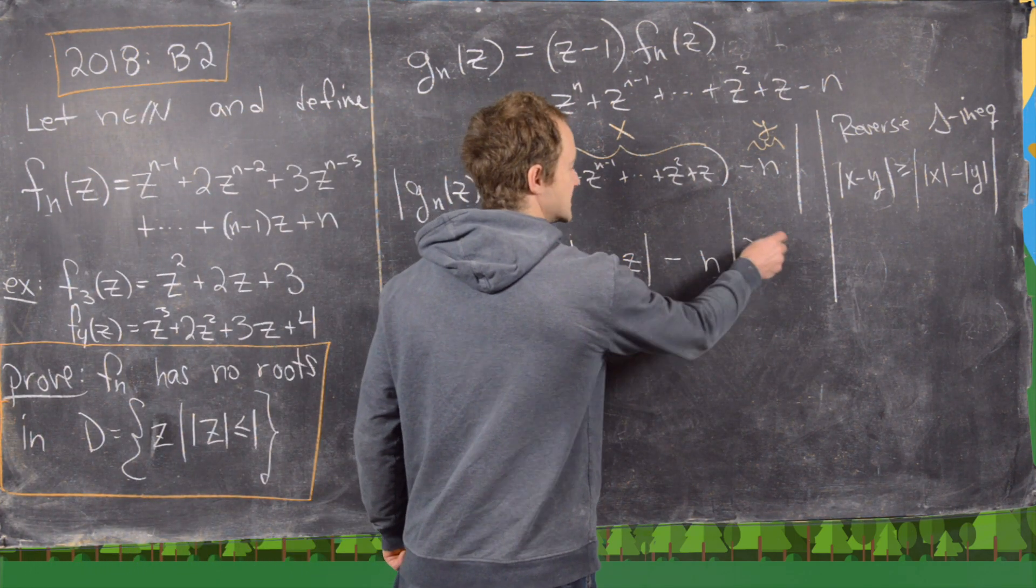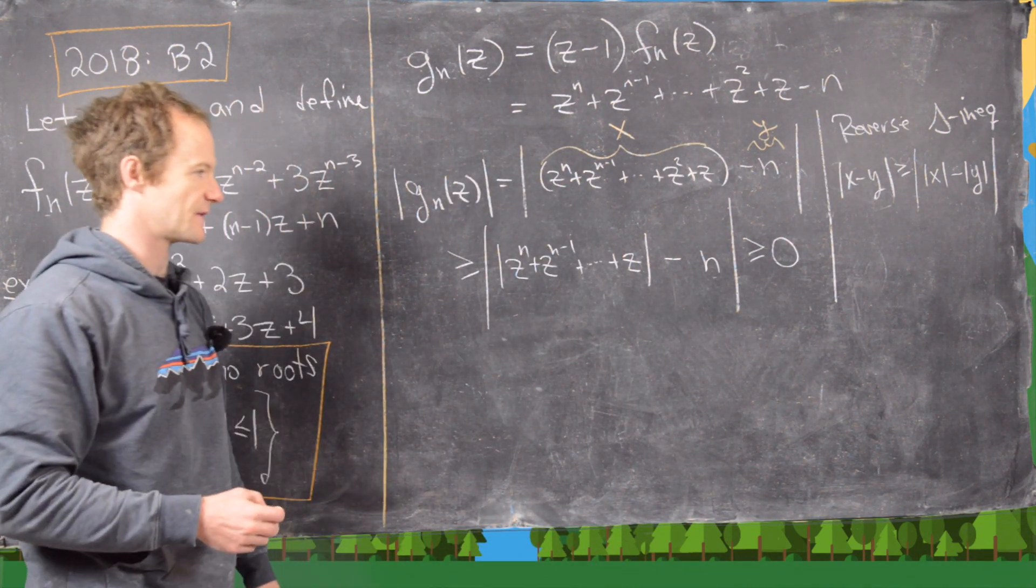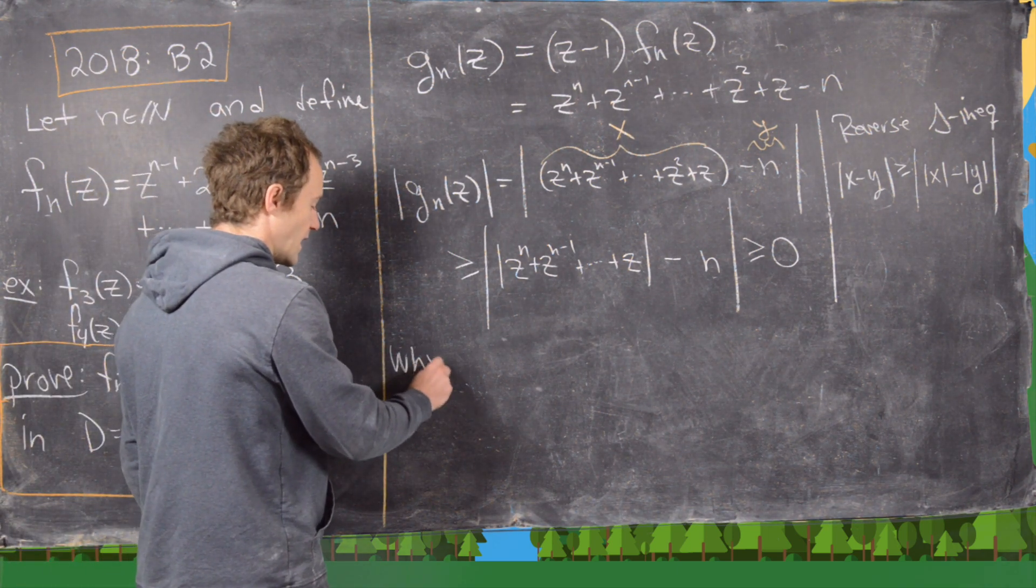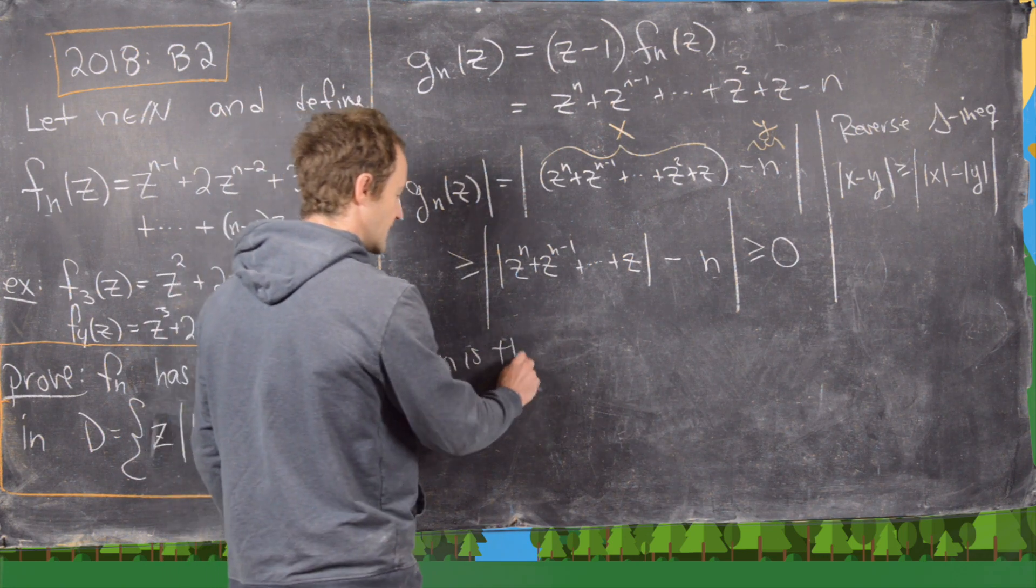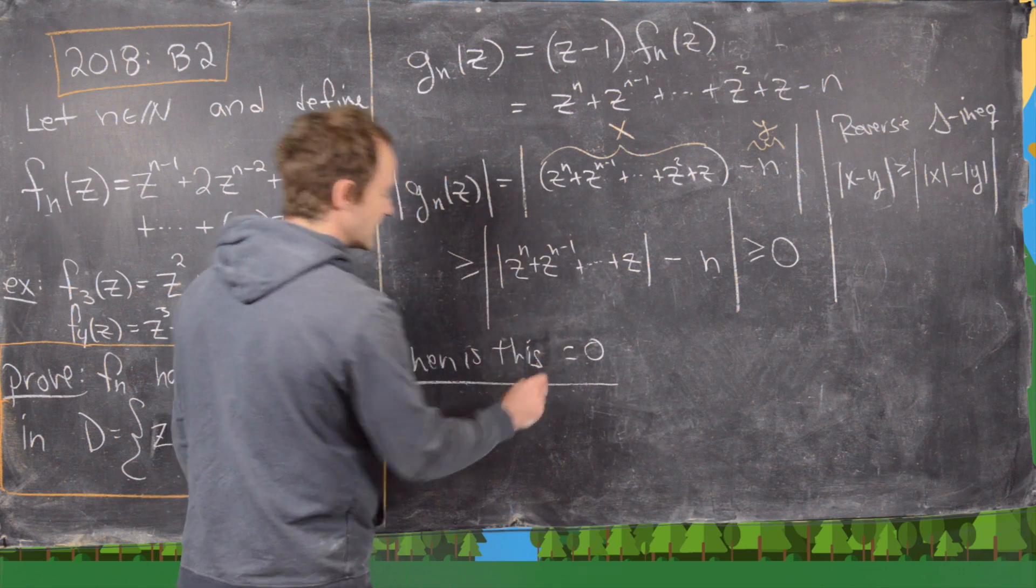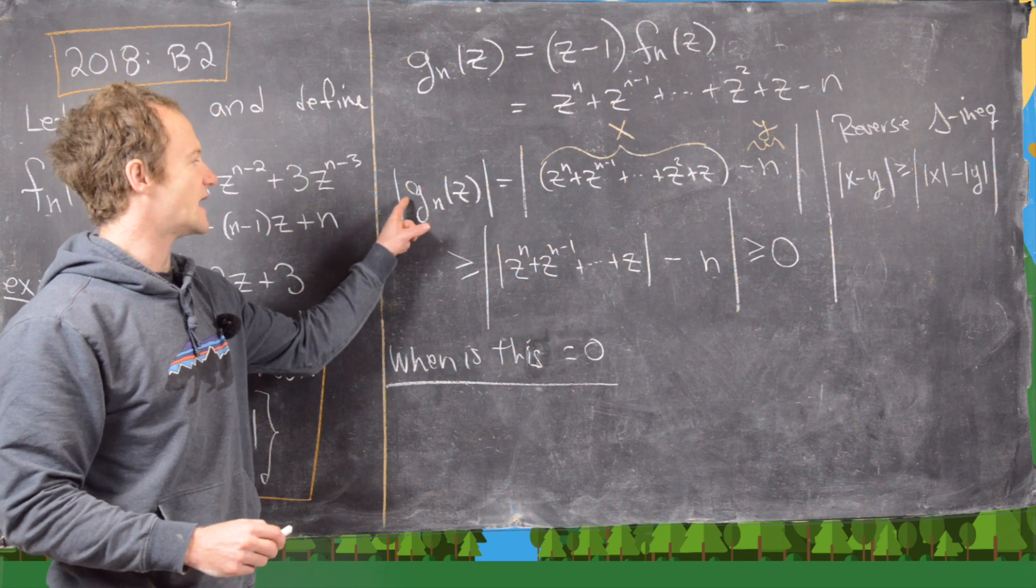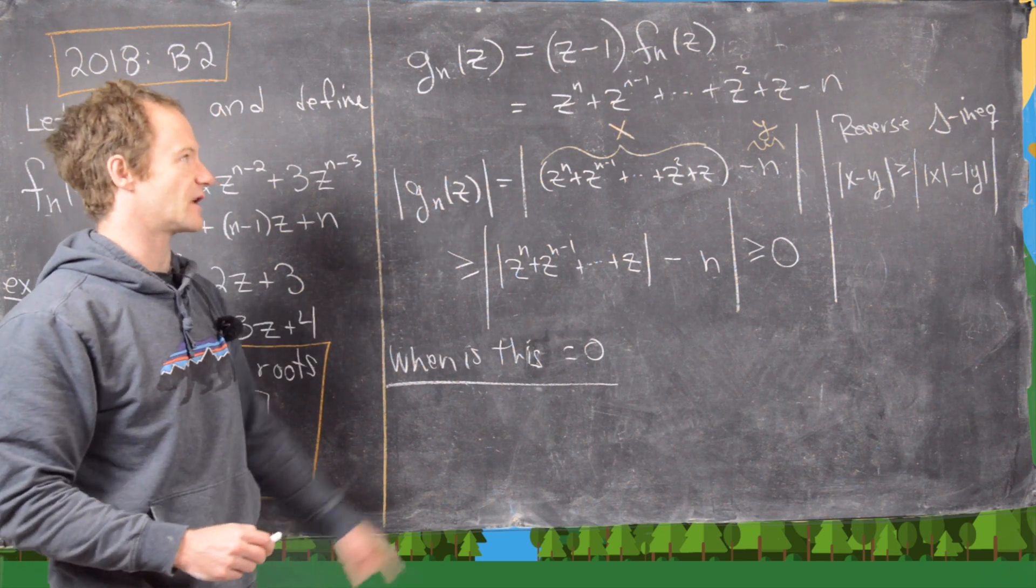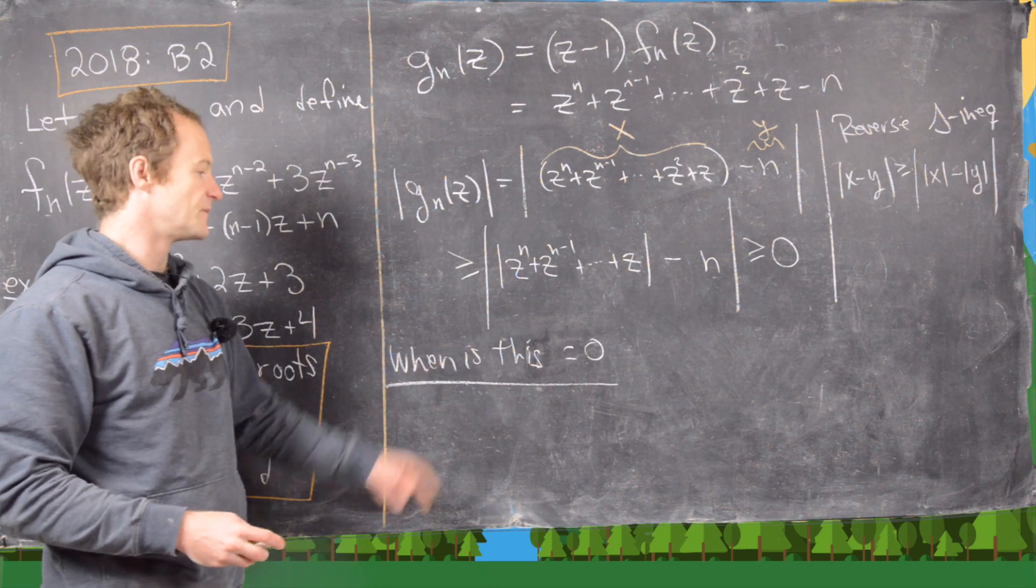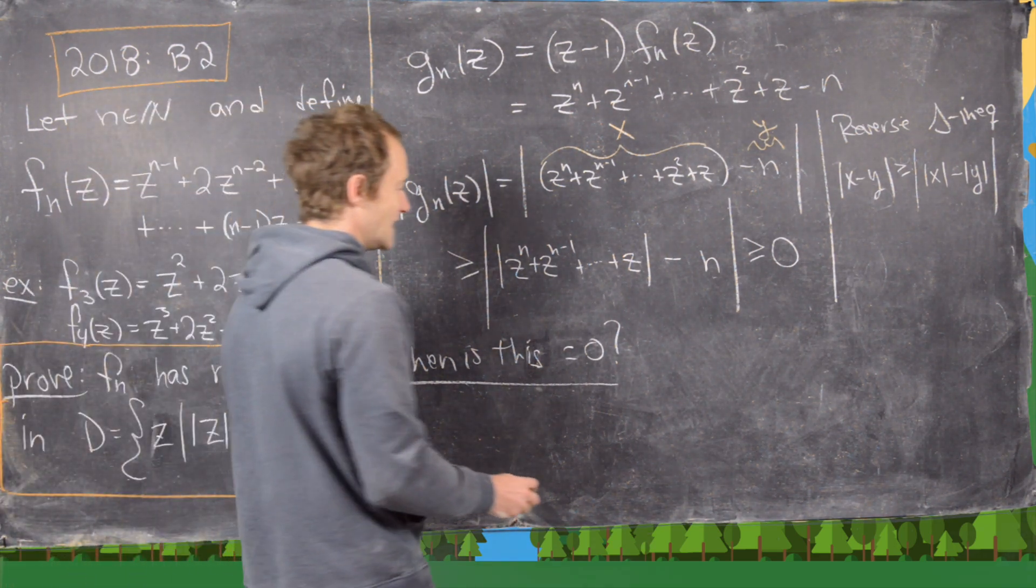But now notice that this is always bigger than or equal to zero. That's obvious because we're taking a modulus here, and that always gives you something bigger than or equal to zero. And now notice that we really want to look at when is this equal to zero, because that's the only place this could go wrong. If this is always bigger than zero, then we're good to go because we have gn(z) is bigger than zero, which means that fn, its modulus would be bigger than zero.